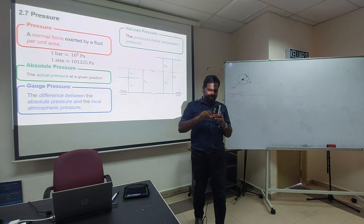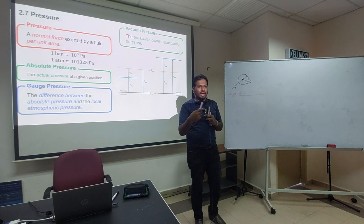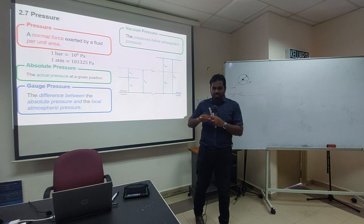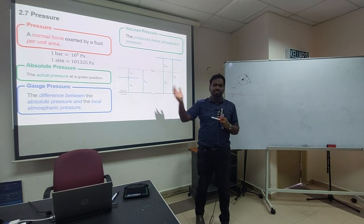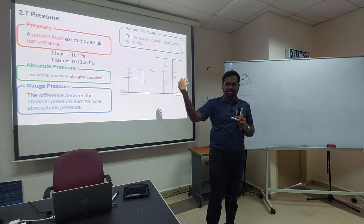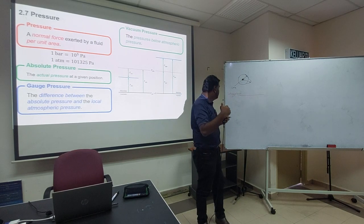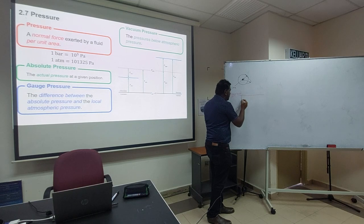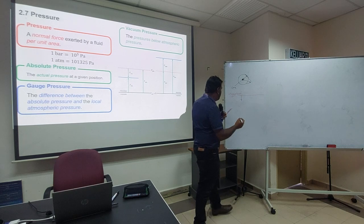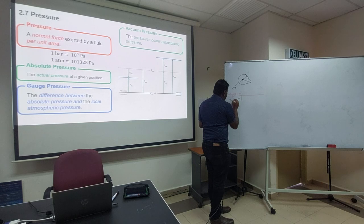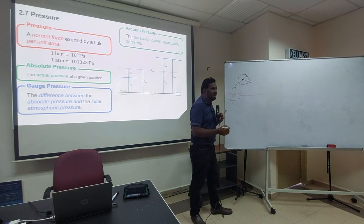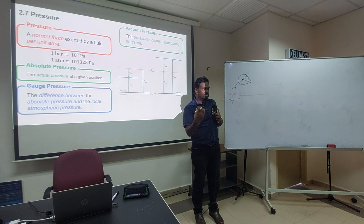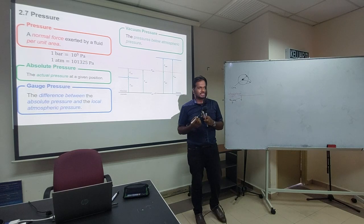Different parts of the world have different atmospheric pressure. Atmospheric pressure is the pressure naturally present in the surrounding atmosphere. If the pressure you are measuring is less than atmospheric pressure, we call it vacuum pressure. So you already have atmospheric pressure around you, and when you measure something that is below atmospheric pressure, that is vacuum pressure.